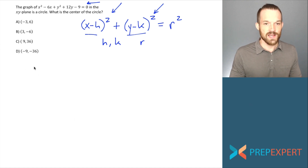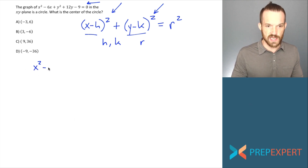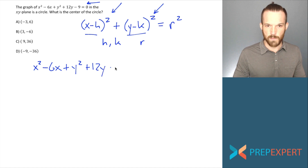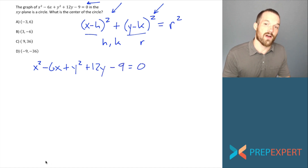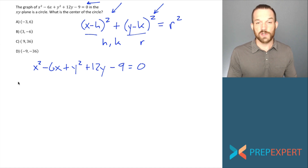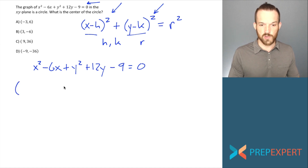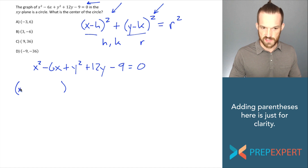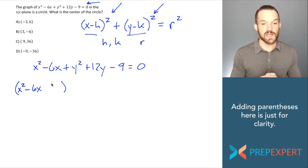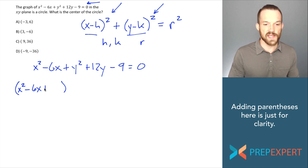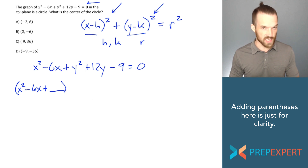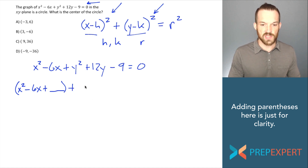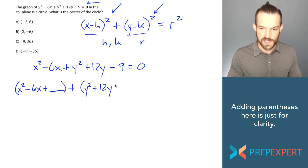The first step in completing the square is writing out the equation they gave us: x squared minus 6x plus y squared plus 12y minus 9 equals 0. Now I want to separate my x variables from everything else and put them inside some parentheses — x squared minus 6x — and add a blank inside the parentheses that we'll fill in later. I'm going to do the same thing for the y's: group the y's inside some parentheses and add a blank for the y's as well.